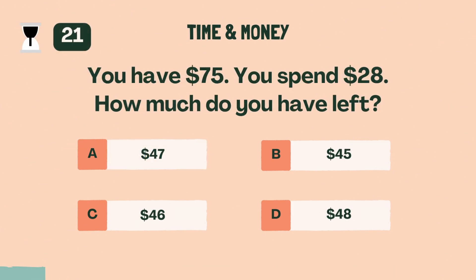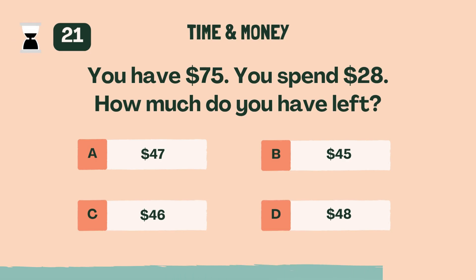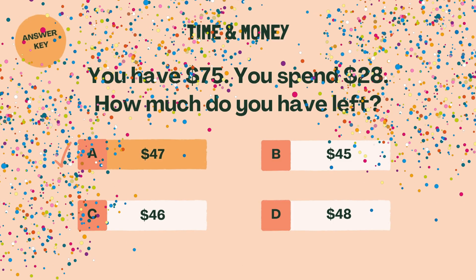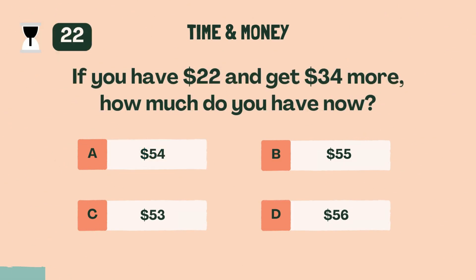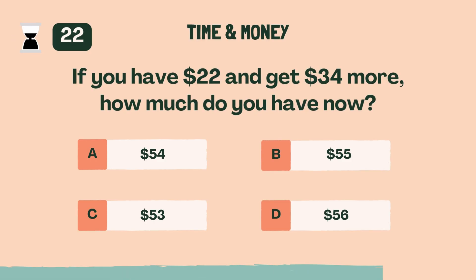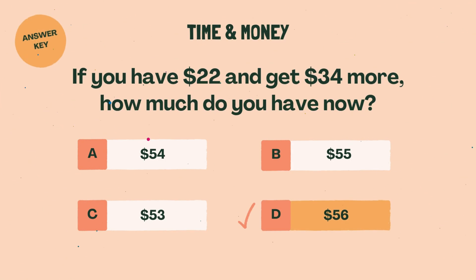You have $75. You spend $28. How much do you have left? A, 47. If you have $22 and get $34 more, how much do you have now? D, 56.